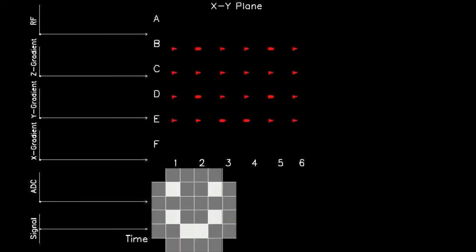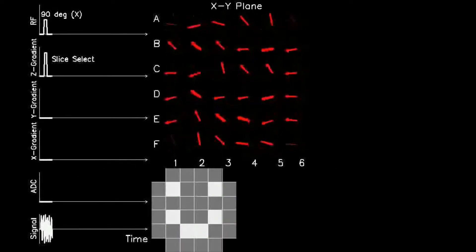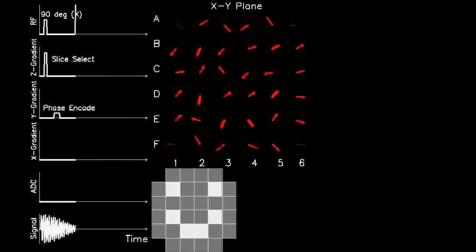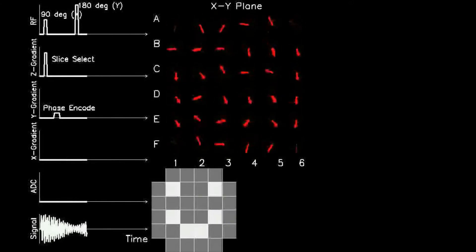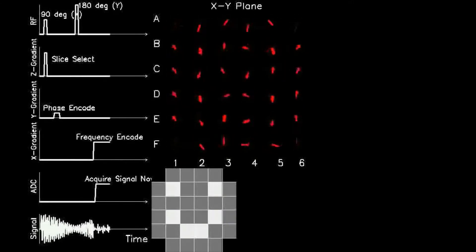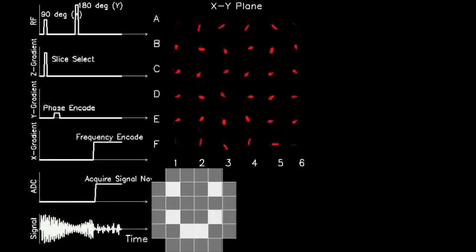The last movie combines the previous two 1D examples into a two-dimensional example. Here, the lower left paramedian panel shows a 2D model of a face slice to be imaged, representing as a 6 by 6 array of grayscale densities.